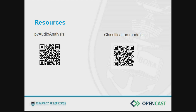In our Opencast implementation, we collect three streams: the presentation stream, the presenter stream, and an audio signal. We only look at the audio signal. That's part of the workflow that happens on the Opencast side — we process the audio signal first, get the trim points, and then use that to create a default SMIL file for Opencast.